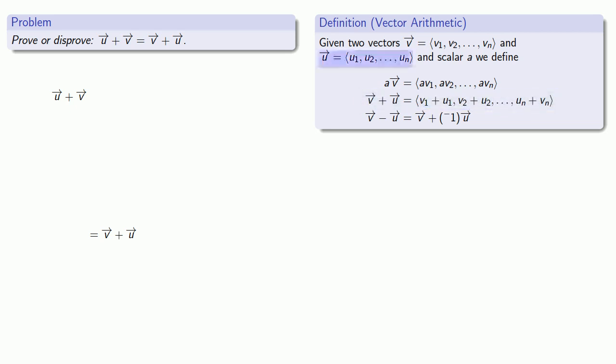So if my vector u has components u1 through un, and my vector v has components v1 through vn, the sum u plus v is going to be the vector whose components are u1 plus v1, u2 plus v2, and so on.